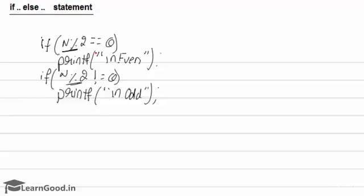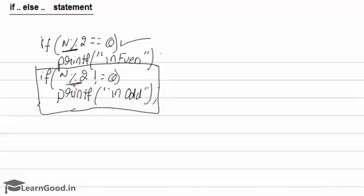Two times we are checking this condition. But if the first condition is true, there is no possibility that the second condition needs to be checked — it will always be false. If I give n equals 24, then 24 mod by 2 equals 0, this condition is true, it displays 'even'. There's no point in checking 24 mod by 2 is not equals to 0 again. This redundancy can be avoided when you use if-else.